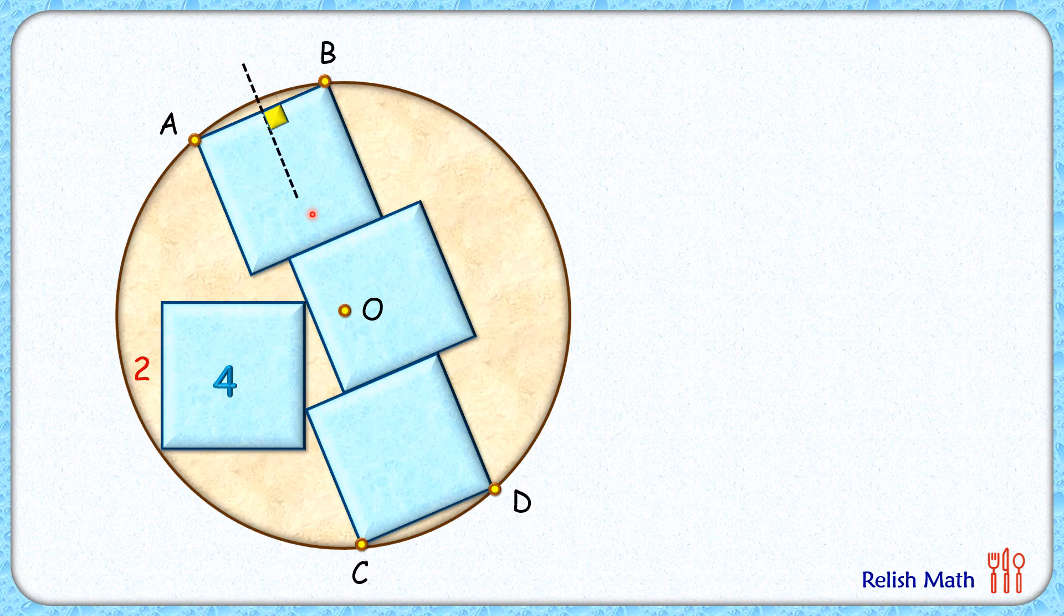AB with respect to this circle is a chord. Let's draw its perpendicular bisector. So these lines will be one plus one, and by theorem, the perpendicular bisector passes through the center of the circle.